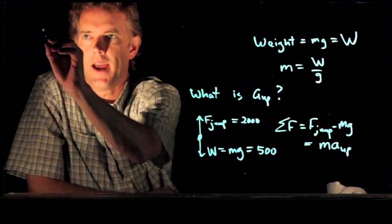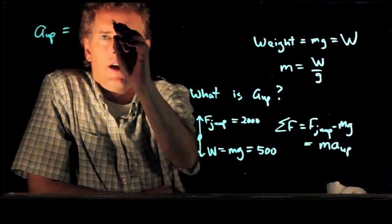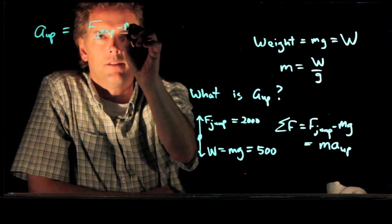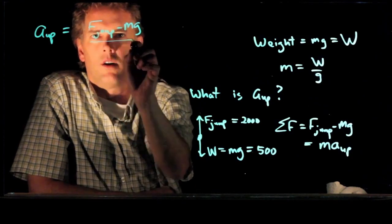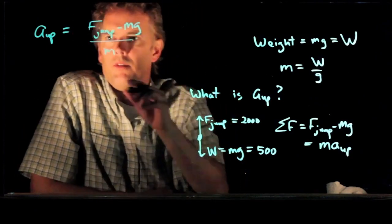We get a_up equals F_jump minus mg all over m. And now we know all those numbers.